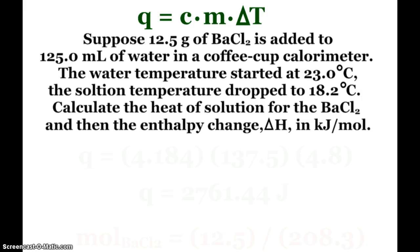Let's suppose 12.5 grams of barium chloride is added to 125 milliliters of water in a coffee cup calorimeter. Our water started at 23 degrees Celsius, it dropped to 18.2. So I want to know the heat of solution for the barium chloride, and then the enthalpy change in kilojoules per mole. So I'm going to use my Q equals Cm delta T, and since we're predominantly talking about water here, I'm going to stick with the same C of 4.184. My mass now is the mass of the solution, so I have to take 125 milliliters, which of course for water we can say grams, since its density is 1 gram per milliliter. And I need to add the 12.5 grams of my barium chloride to that.